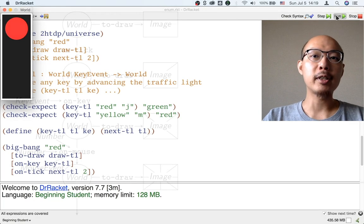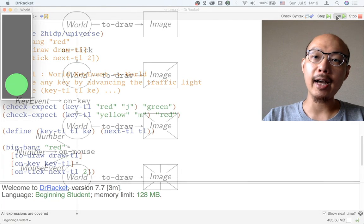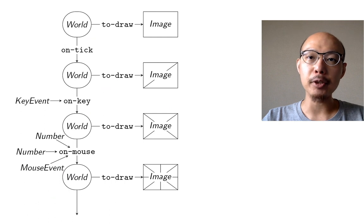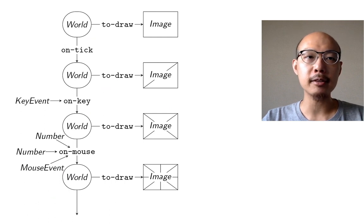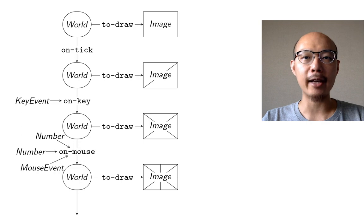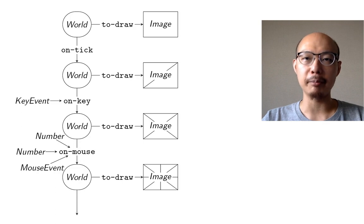We're going to see more kinds of handlers in this class. The next kind we're going to see is an onMouse handler, and that's going to allow us to handle clicking, dragging, and moving of the mouse.